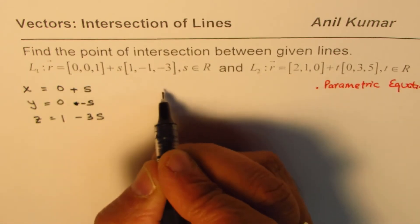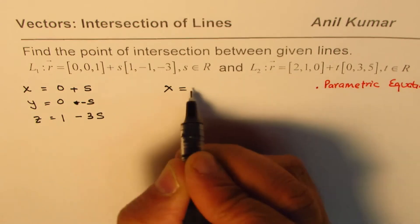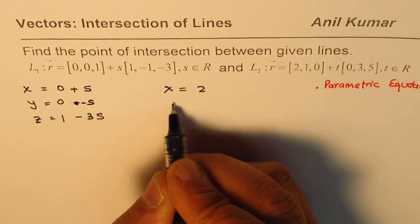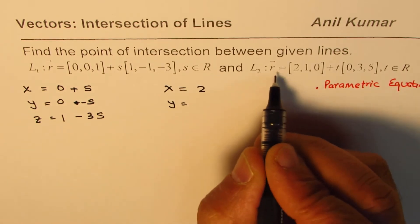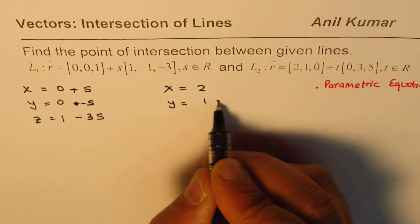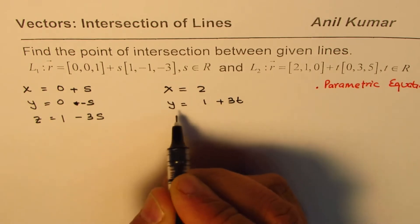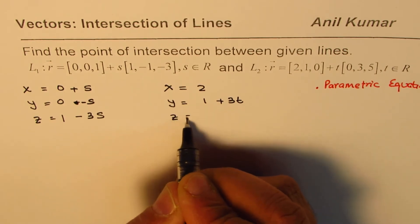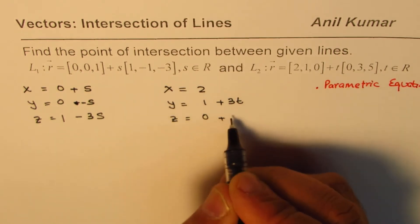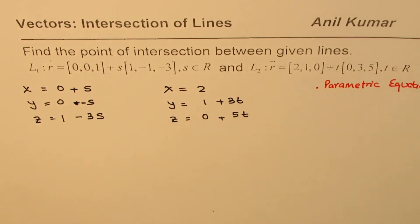For line 2 we have x equals 2 plus 0t, so there is nothing there. y equals 1 plus 3t, and z equals 0 plus 5t. So that is how we can get the parametric equations.